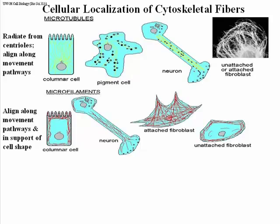To the right of the neuron are an attached and an unattached fibroblast. Microfilaments have a very different organization depending on whether the cell is attached to a surface — called a substratum — or whether the cell is suspended in medium. An unattached fibroblast takes on roughly an oval or spherical shape, and like the columnar cell, the actin is organized largely in the cortex, just under the cell membrane, forming a cortical ring of microfilaments. When a cell like this attaches to a surface, one of the first things it does is flatten out and start to move, requiring a reorganization of the microfilaments.